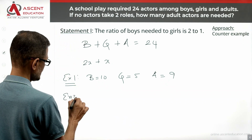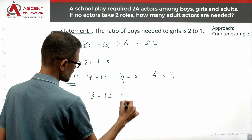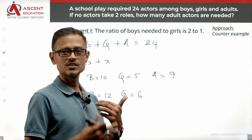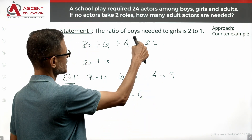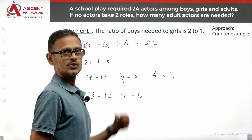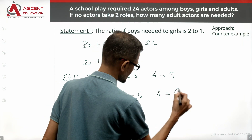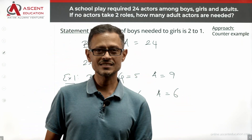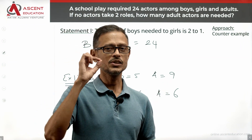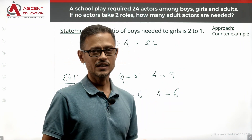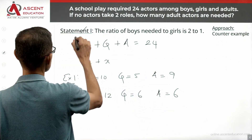Let's take another example. Increase the number of boys by 2, so the number of boys is 12. Then the number of girls is 6, because the boys to girls ratio is 2 to 1. Boys and girls together is 18. With 24 total actors, the number of adults is 6. So the number of adults can be 9, or 6, or 3 — multiple possibilities exist. We are not getting a unique value from Statement 1. Therefore, Statement 1 alone is not sufficient. Eliminate answer option A.